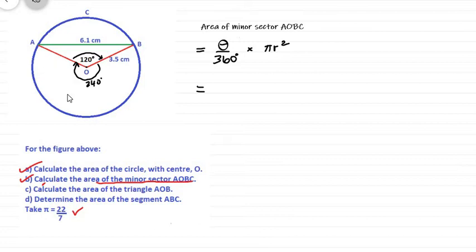But we're not looking for the area for this sector, the major sector. We're looking for the area for this sector, the minor sector. And remember, the minor sector is between the arc and the two radii. So that would be 120 out of 360, multiplied by pi r squared, which we recorded already to be 38.5 centimeters squared.